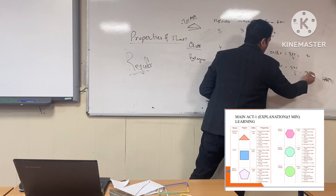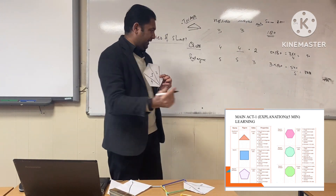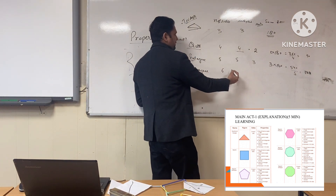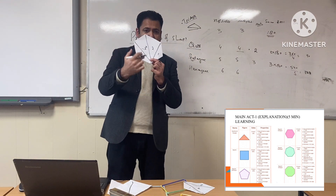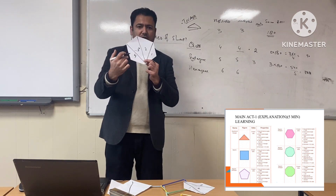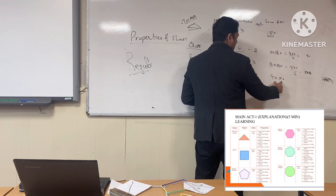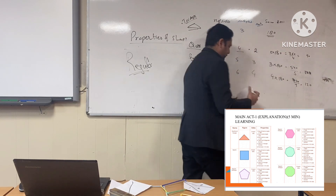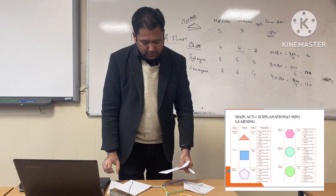The next shape is a hexagon — 'hexa' means six, 'gon' means corners or angles. Number of sides: six. Number of angles: six. How many triangles can we make? If we cut the hexagon into triangles — one, two, three, four — we can make four triangles. So the sum is four times 180, which equals 720 degrees. If it is a regular hexagon, divide by six to get one angle, which equals 120 degrees — but only if it is regular.